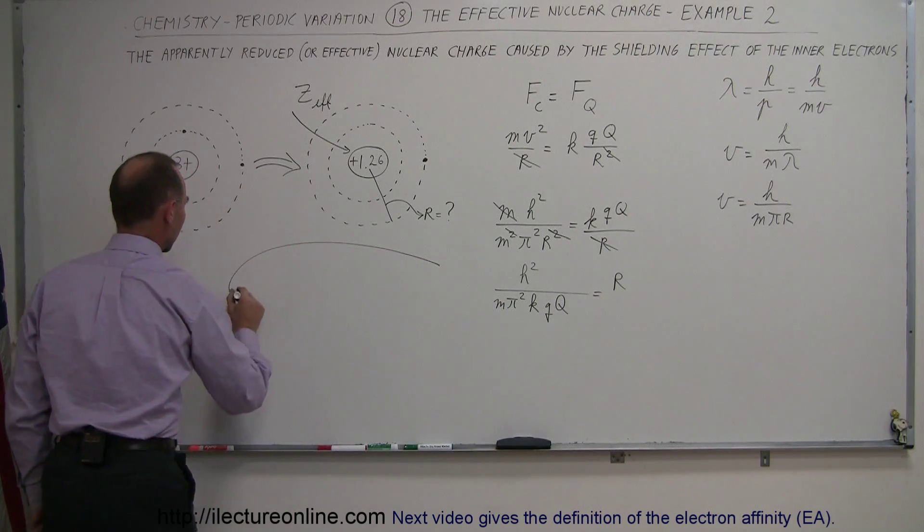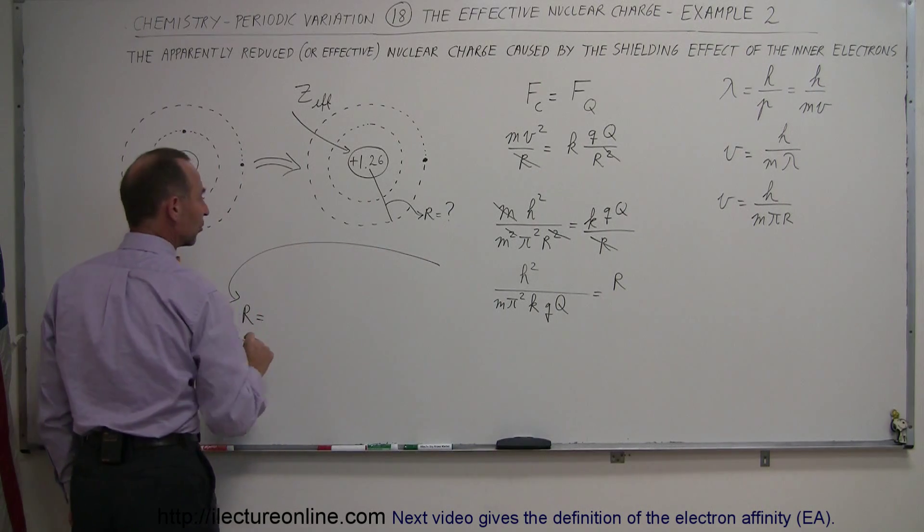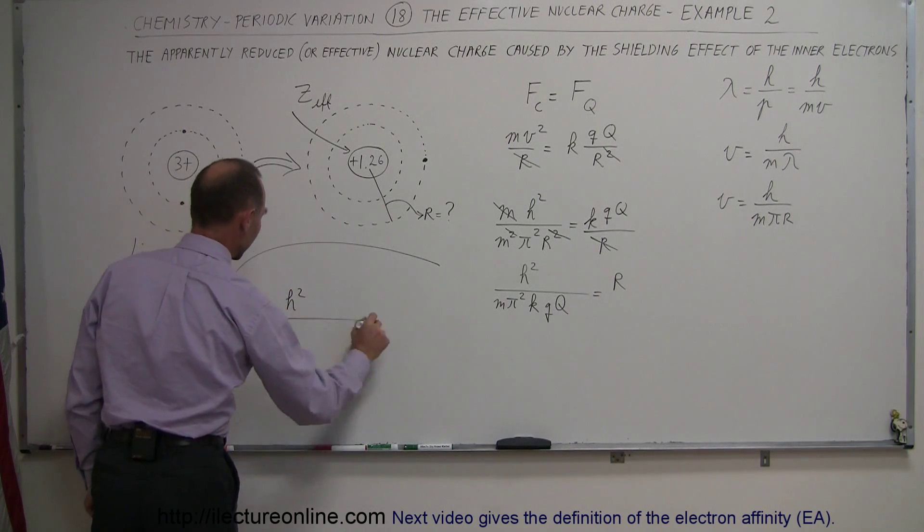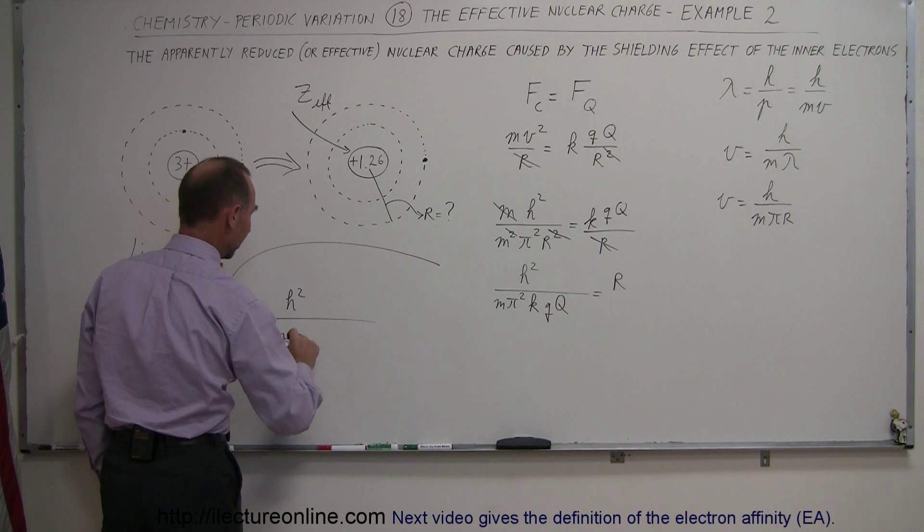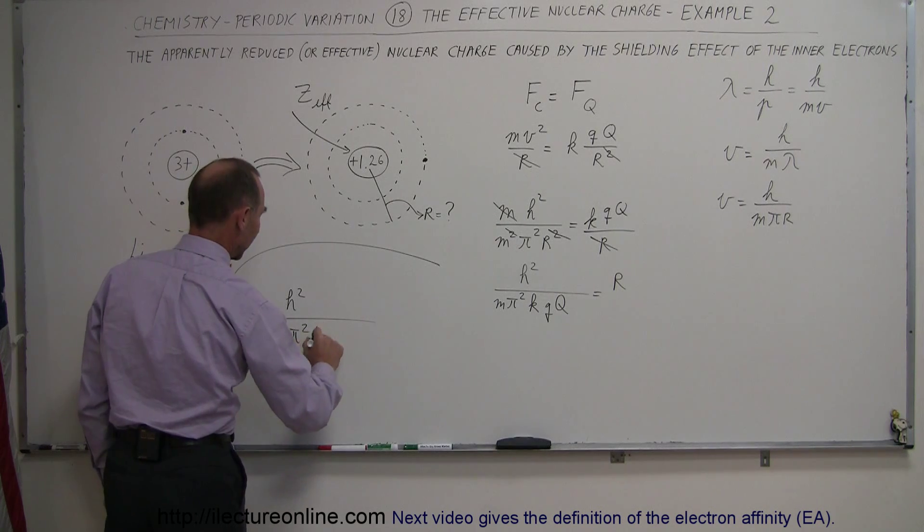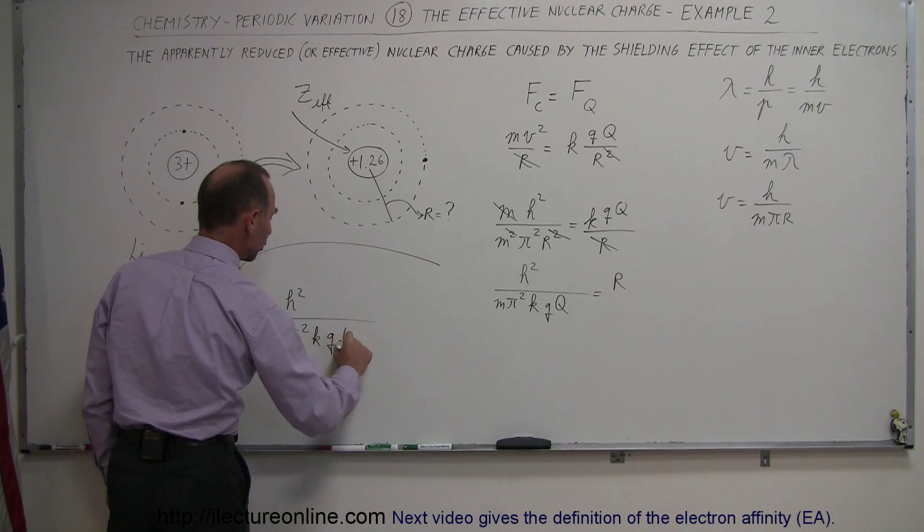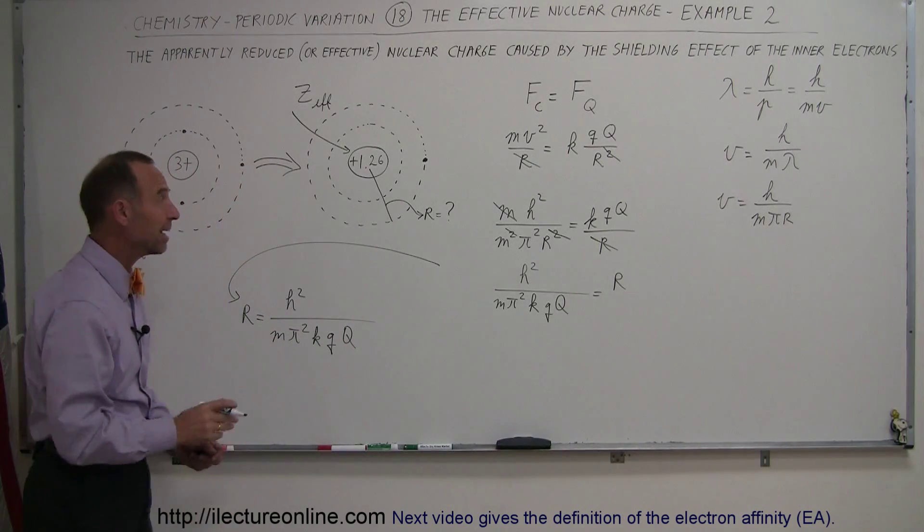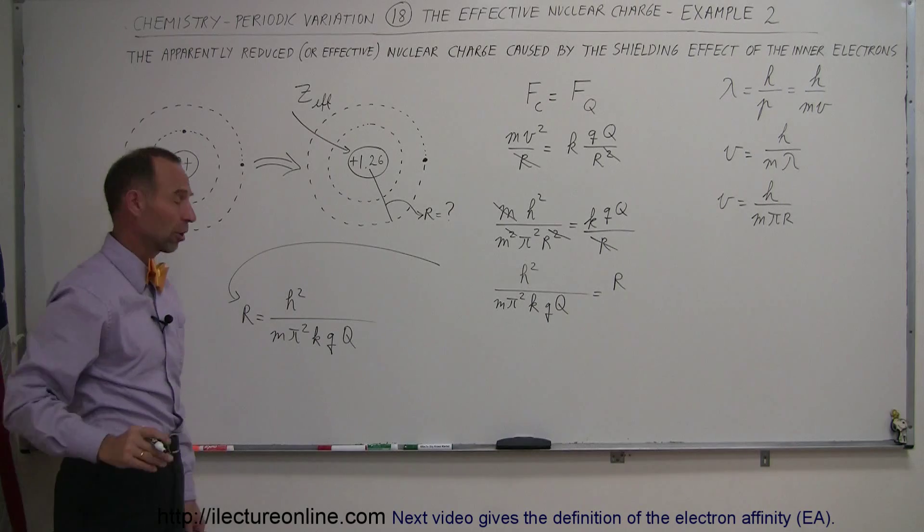So the radius of lithium atom is going to be equal to h squared, this is Planck's constant squared, divided by the mass, divided by pi squared, by k times small q, big Q, small q charge of the electron, big Q charge of the effective nucleus, the effective charge on the nucleus.